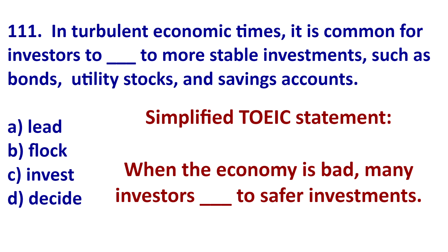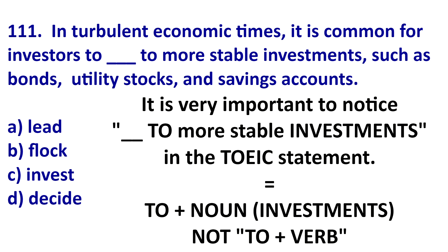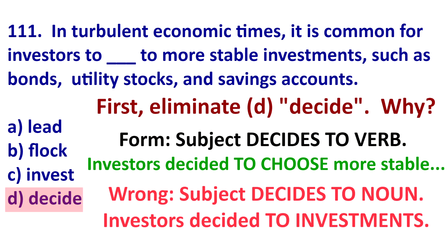The main idea of the question is: when the economy is bad, many investors blank to safer investments. Now let's eliminate answers. It is very important to notice that after the blank there is 'to' plus a noun — they say 'to more stable investments,' not 'to verb.' Therefore we can eliminate D, 'decide,' because 'decide to' is followed by a verb, as in 'investors decided to choose more stable investments.'